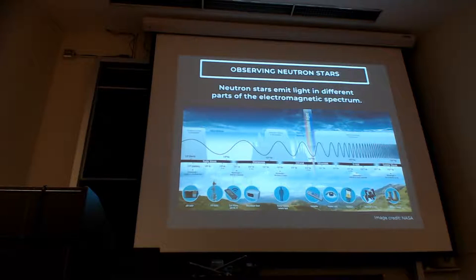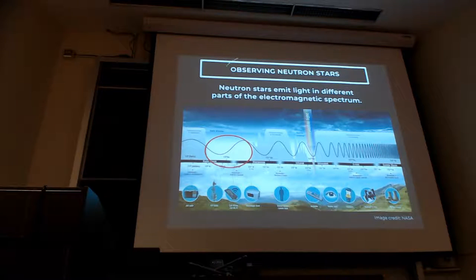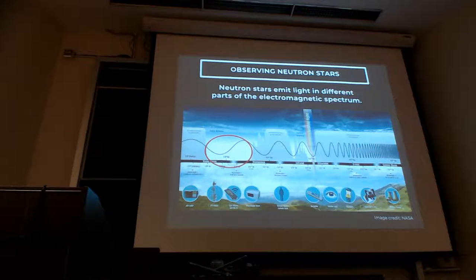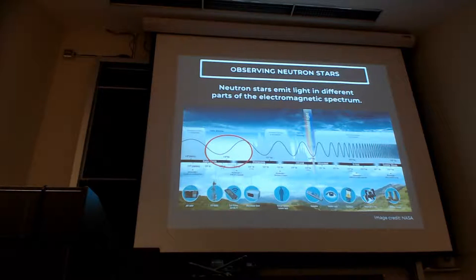Neutron stars can be observed in the radio wave band. Imagine this is outer space and this is the atmosphere — a lot of different wavelengths are absorbed in the atmosphere, which is really good for us because it absorbs a lot of gamma rays the sun creates. But the atmosphere is transparent to part of the radio band, so you can observe neutron stars in the radio band from Earth if you have radio telescopes.